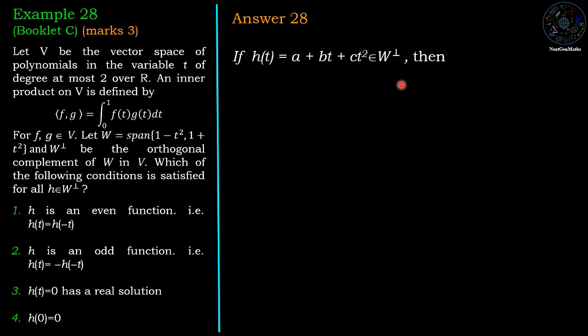Now suppose h(t) belongs to W perp, so h(t) belongs to V and we contain the polynomials in variable t of degree at most 2. So h(t) is in the form of a plus bt plus ct squared.